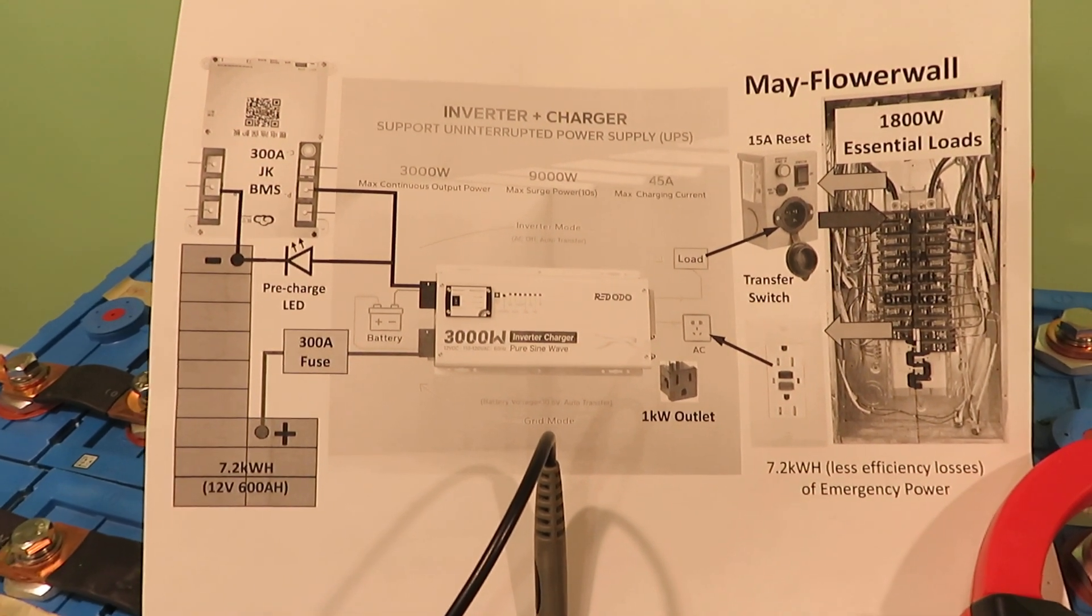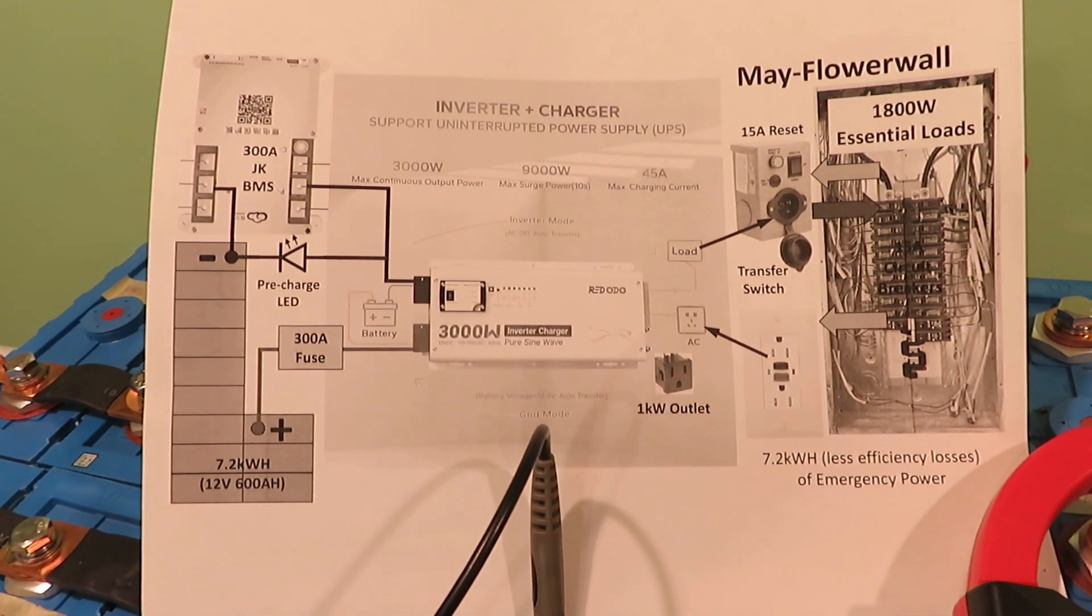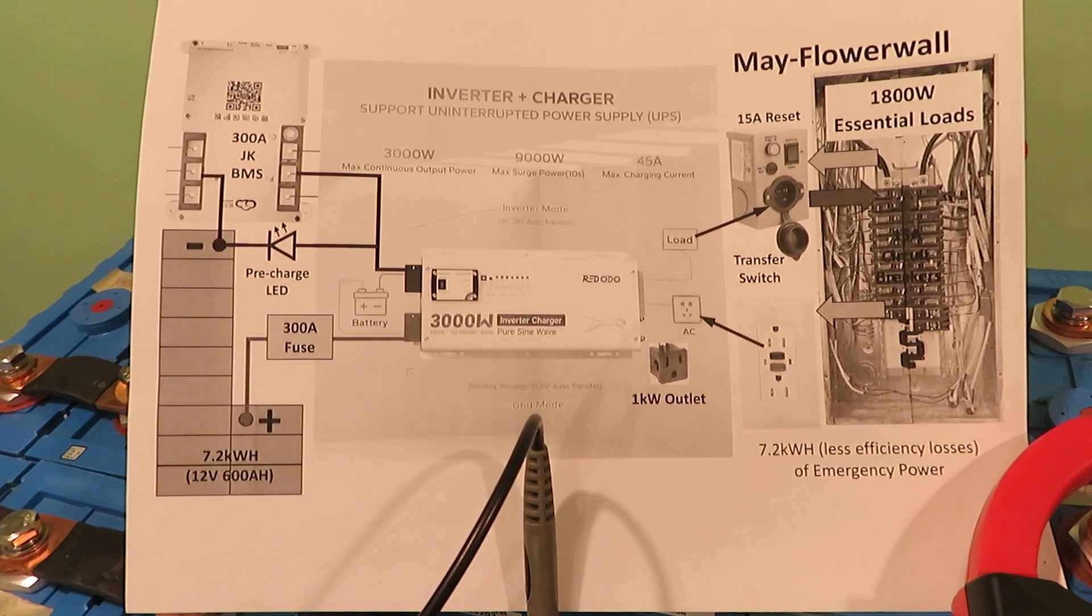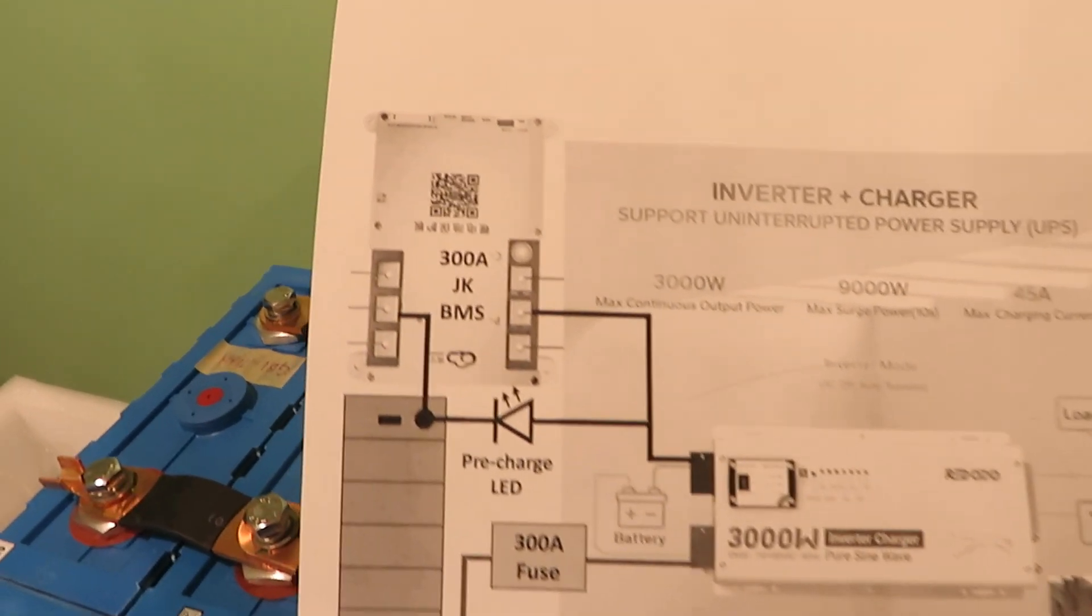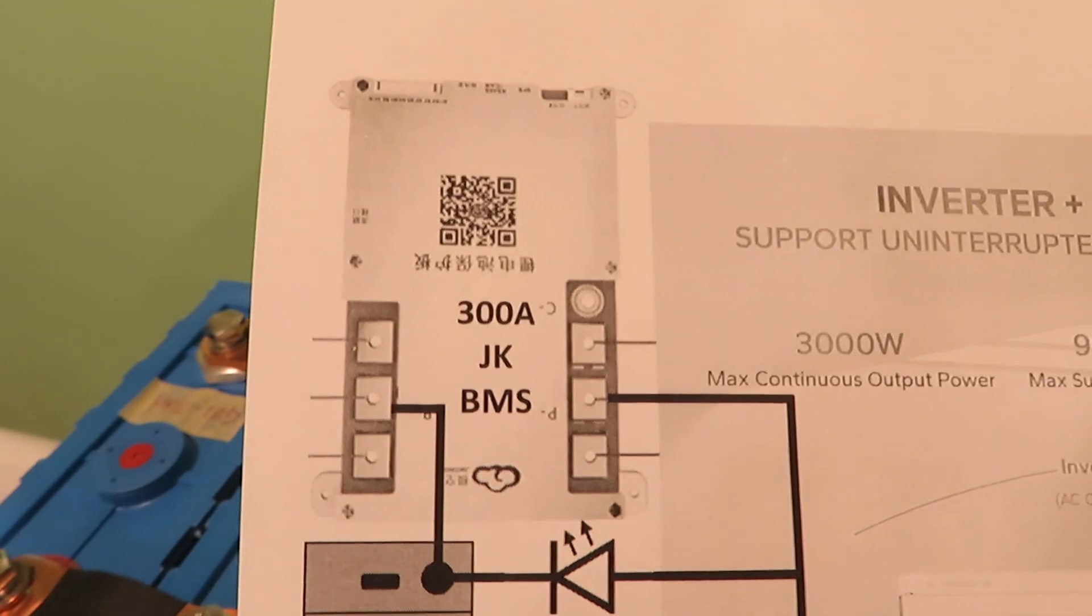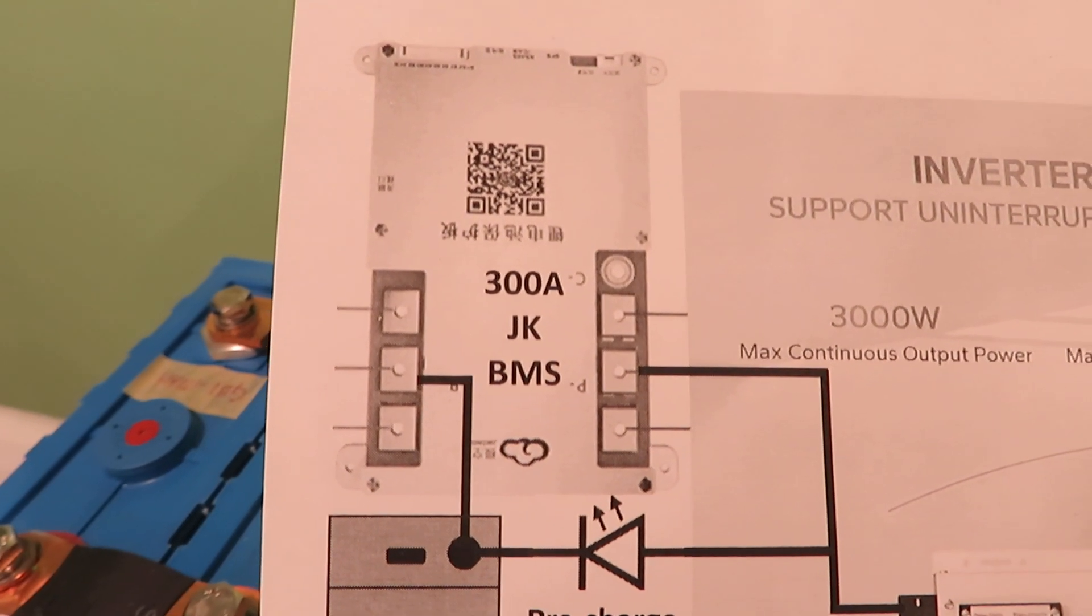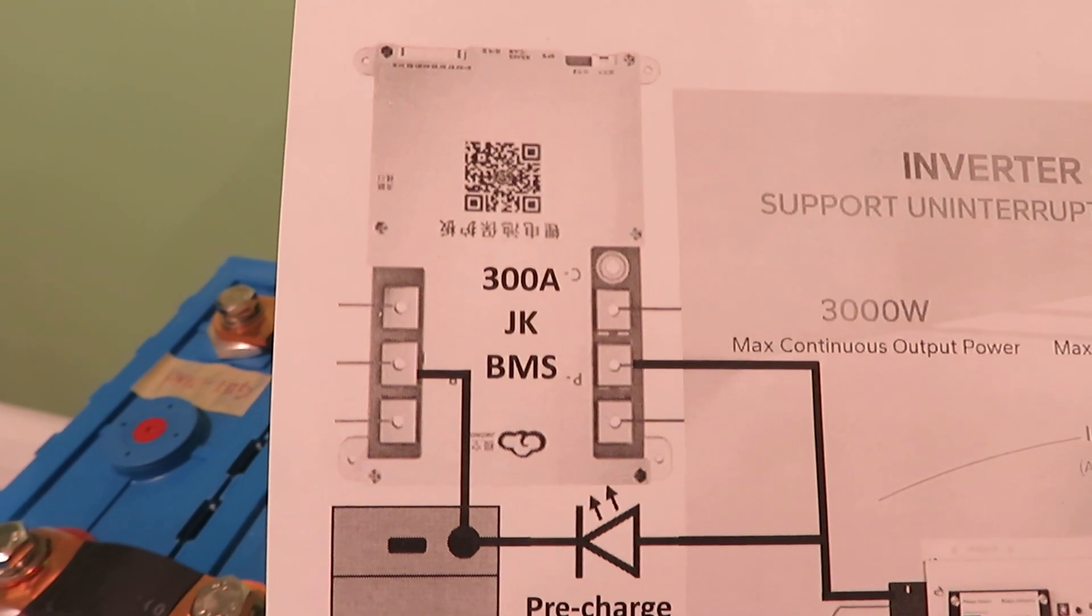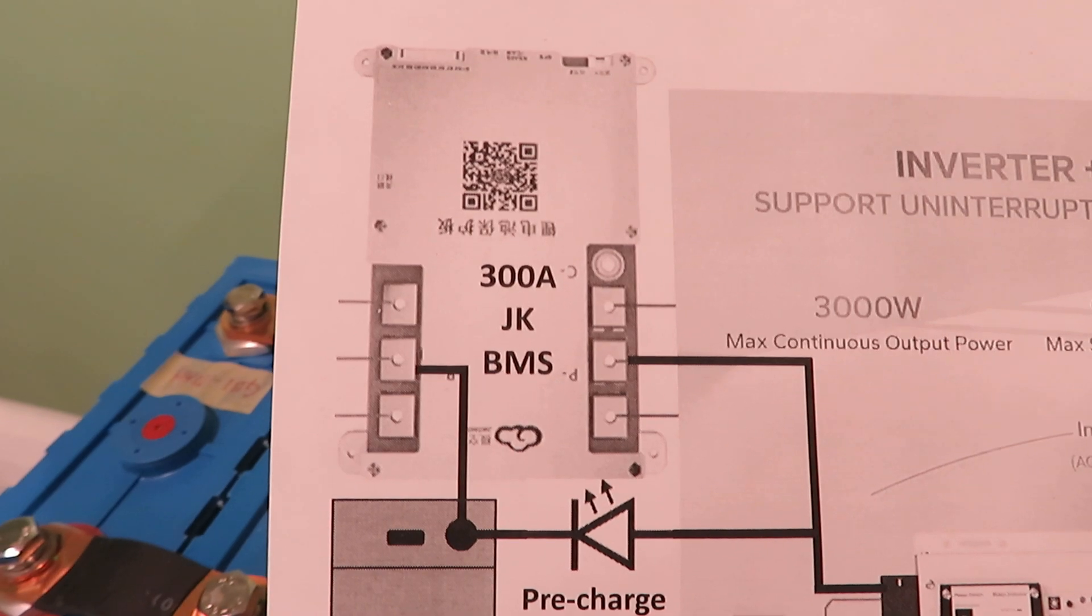Each time when hooking it up there'll be a huge spark, and for the same reason when I turn on the JKBMS it will give me a short circuit protection fault. So it's pretty annoying, but the JKBMS has no problem to overcome it later on.